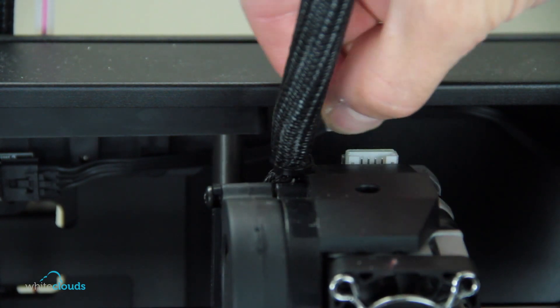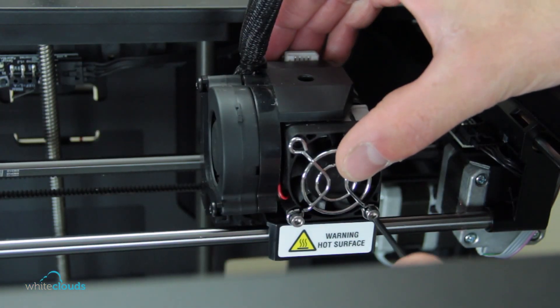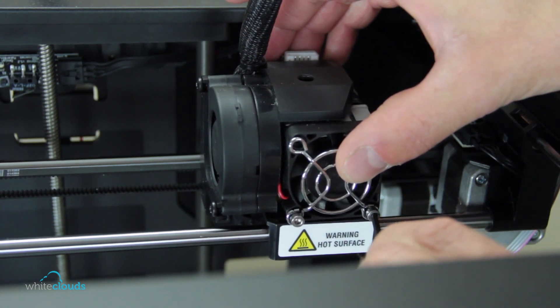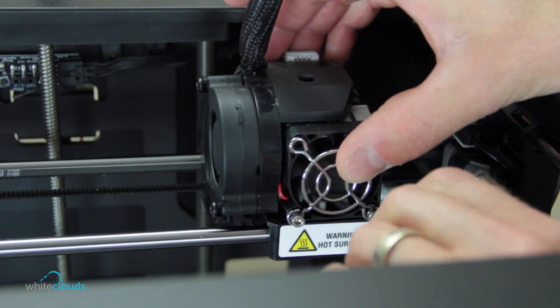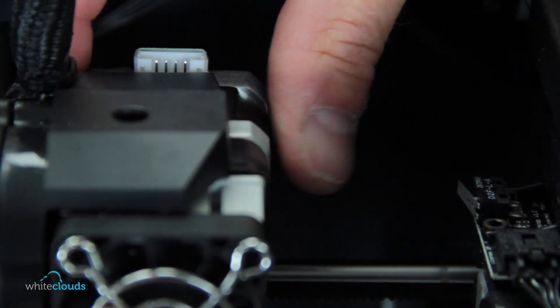You're going to want to remove the plug from the top of the extruder motor. Use the 2.5mm hex wrench to loosen the bolts on the front of the fan, just enough to pull the motor out. Now, slide the motor out of the carriage.